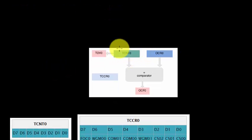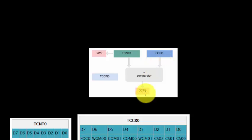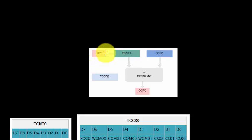There are two registers: TCNT0 is the actual register where the timer value is stored, and OCR is the Output Compare Register — we won't be using this in this video. If we store a particular value in OCR, the timer unit keeps comparing that value to the value in TCNT0, and as soon as it equals that value it raises the OCF (Output Compare) flag. What we'll be using in this video is the TCNT0 register and the TOV flag, which gets generated when the timer overflows.